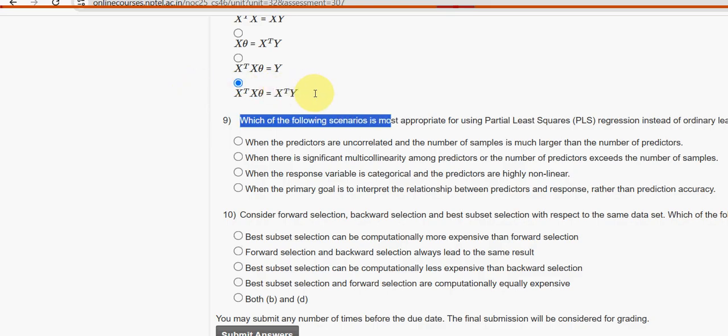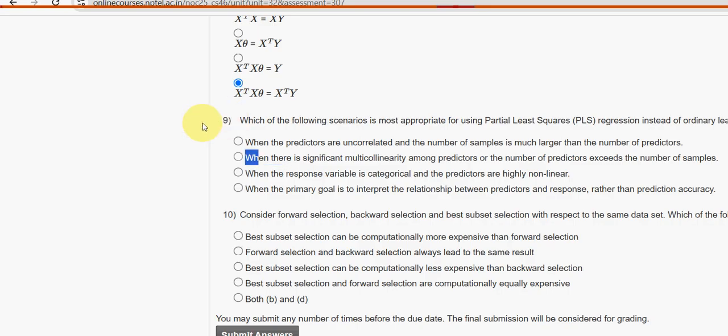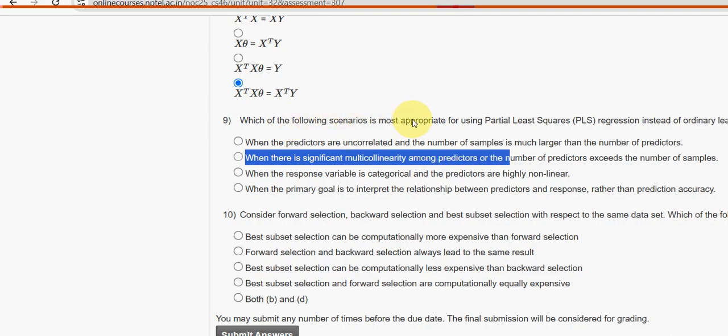Now let's move on to the ninth one. Which of the following scenarios is most appropriate for using partial least squares regression instead of ordinary least squares? For the ninth question, the second option is the probable one: when there is significant multicollinearity among predictors or the number of predictors exceeds the number of samples.